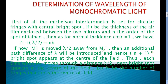When M1 is moved lambda by 2 distance from M2 prime, the n+1th bright spot appears. Then again, another lambda by 2 distance is moved, and the next bright spot appears. Each time, mirror M1 is moved a distance of lambda by 2 from M2 prime. This is done capital N times. Capital N is the number of fringes that cross the center of the field.